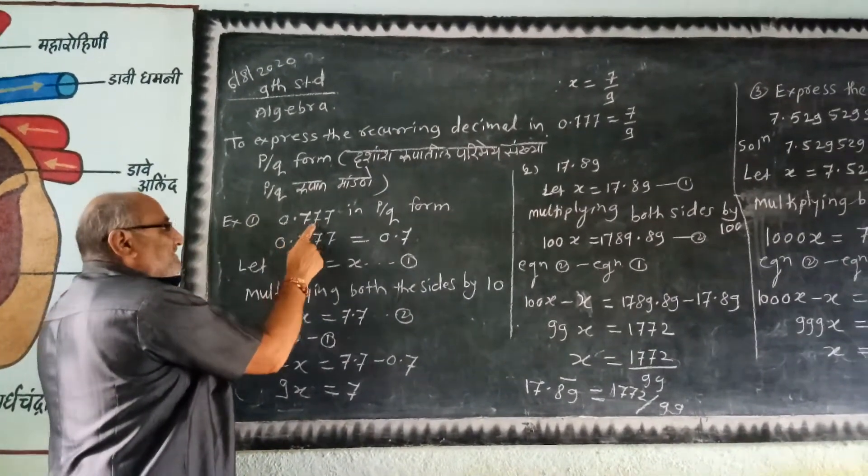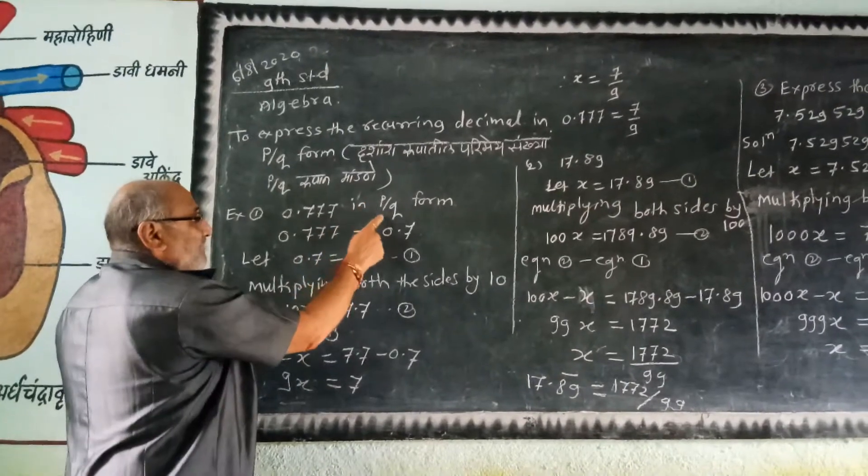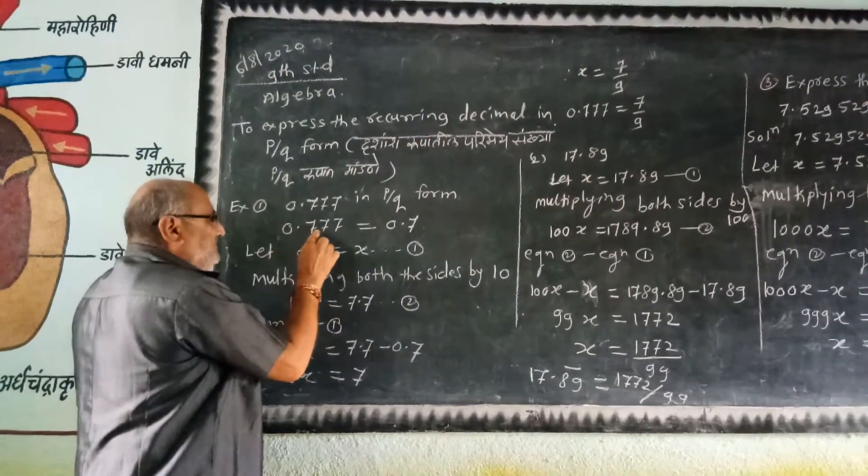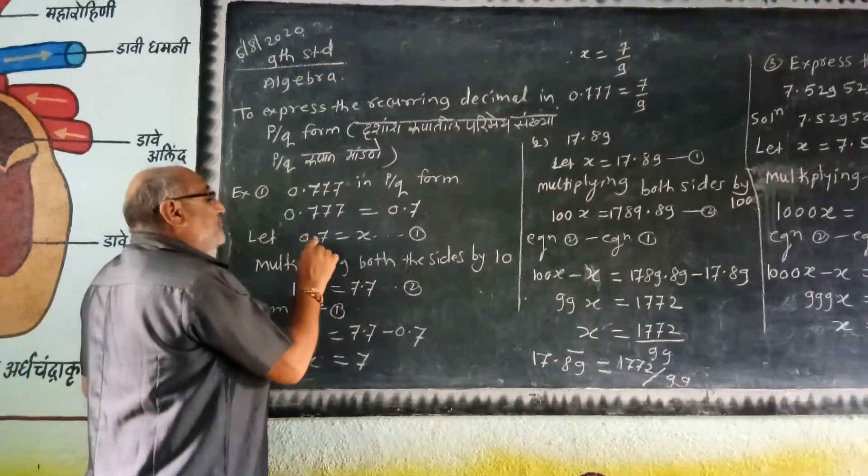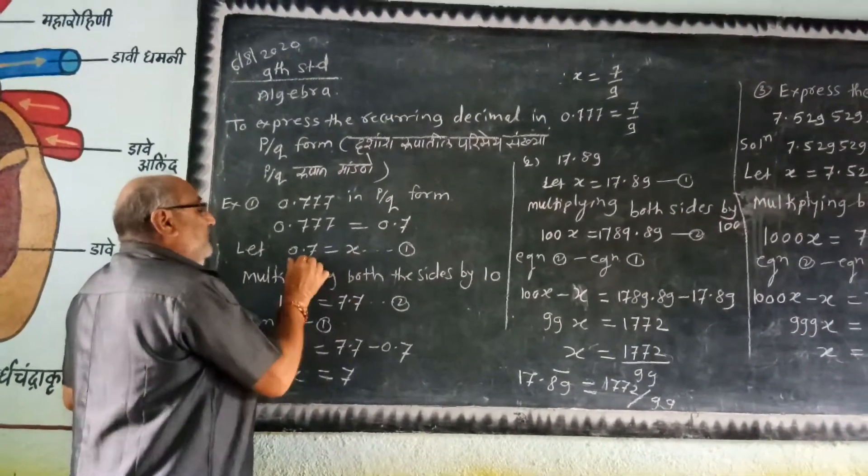For example, number one: 0.773... or 0.7̄ (7 recurring). We write this in form 0.7̄. Let x equal 0.7̄, so x = 0.7̄.